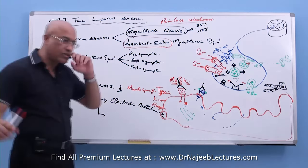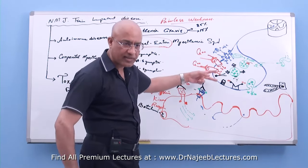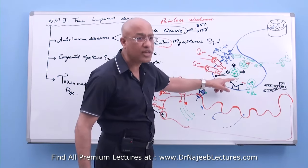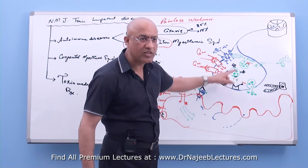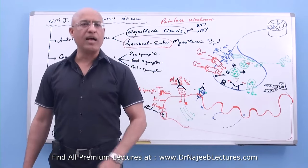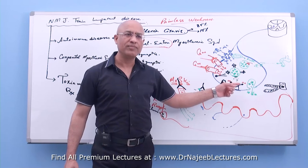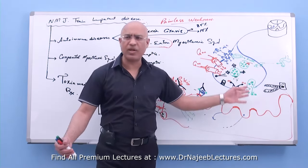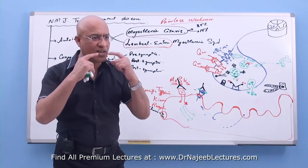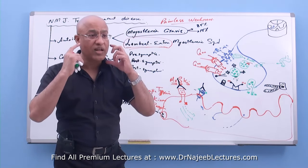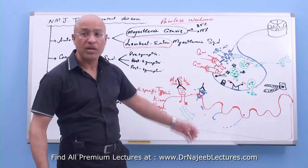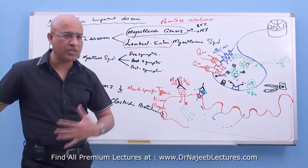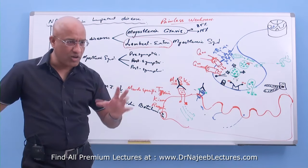What this toxin does is impair calcium-dependent fusion of vesicles with the nerve endings, resulting in poor acetylcholine release and neuromuscular junction dysfunction. This produces sudden onset of painless weakness in a previously healthy person — weakness of extraocular muscles, ptosis, dysarthria, dysphagia, facial paralysis, and in severe cases paralysis of limbs and the respiratory system. There is also autonomic disturbance: dilated or unreactive pupils, dry mouth, constipation, paralytic ileus, and postural hypotension.